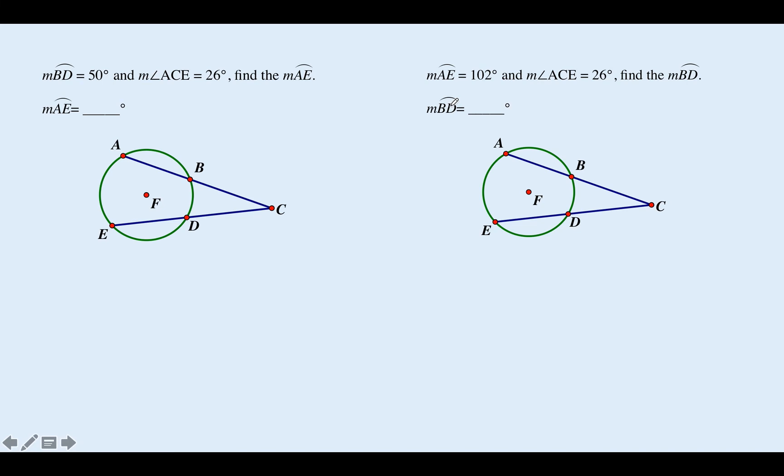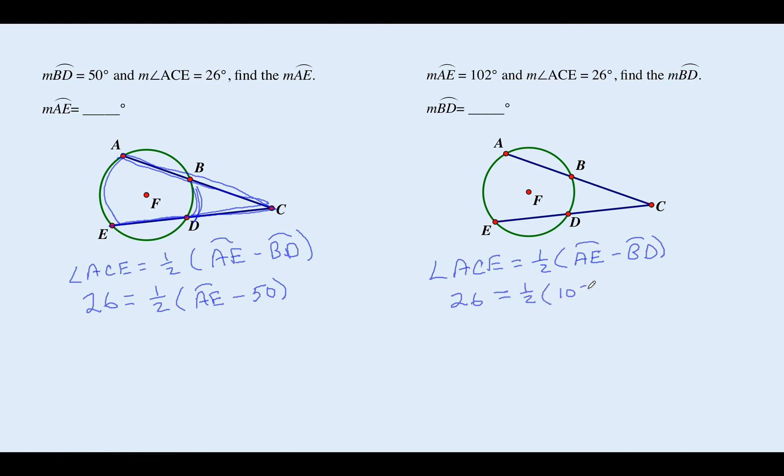Let's try these two. Hit pause, see what you come up with. Angle ACE. Here's angle ACE. I like using three letters sometimes, just mix it up on you guys. Angle ACE equals one half of the big arc AE minus the little arc that's inside the angle, BD. This is the same. I'll just show you different ways to solve these problems. So this is going to be 26 equals one half of AE minus 50. This one's going to be 26 equals one half of 102 minus BD. See if you can pause and finish that up if you haven't done so already.